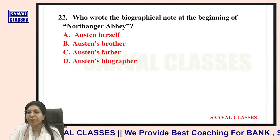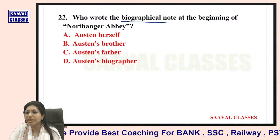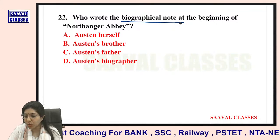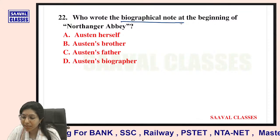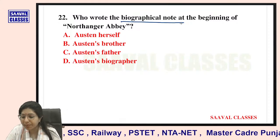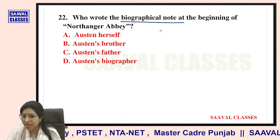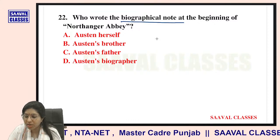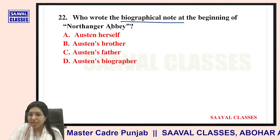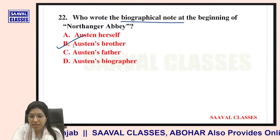Question number twenty-two: Who wrote the biographical note at the beginning of Northanger Abbey? Options are Austen herself, Austen's brother, Austen's father, or Austen's biographer. It was Austen's brother — very right.